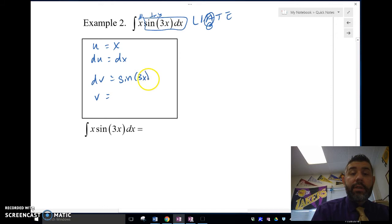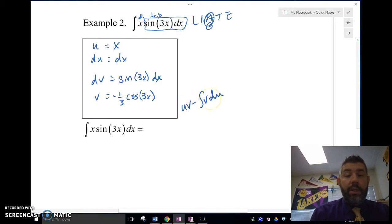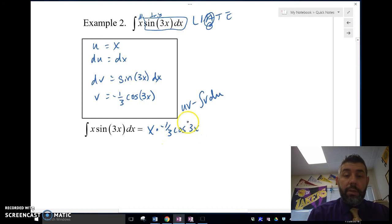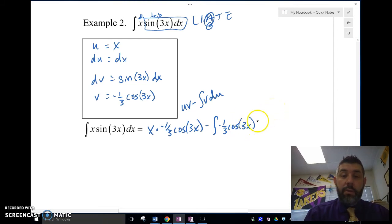So that means u is going to be x. du is going to be dx because we take the derivative of x. dv is going to be this part here, so sin(3x) dx. And then we're going to integrate that. So integrate sin(3x) dx is going to be negative. Antiderivative is going to be negative 1/3 cos(3x). Remember I have to use reverse chain rule there.